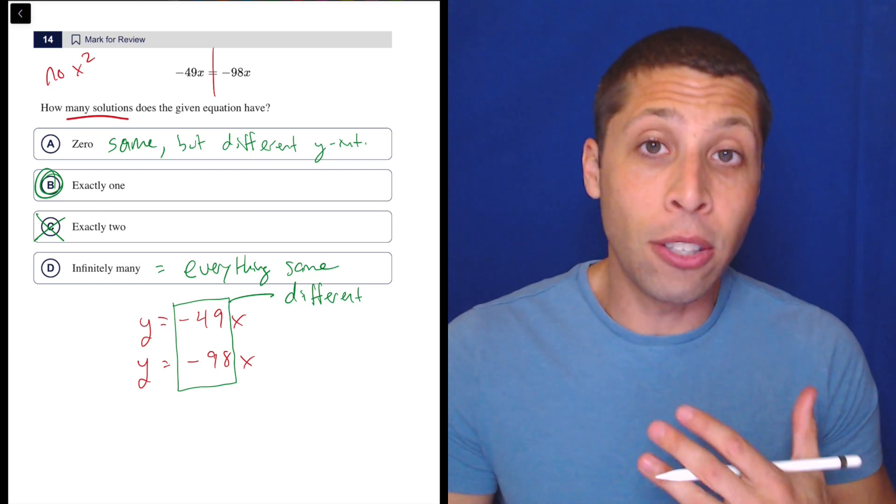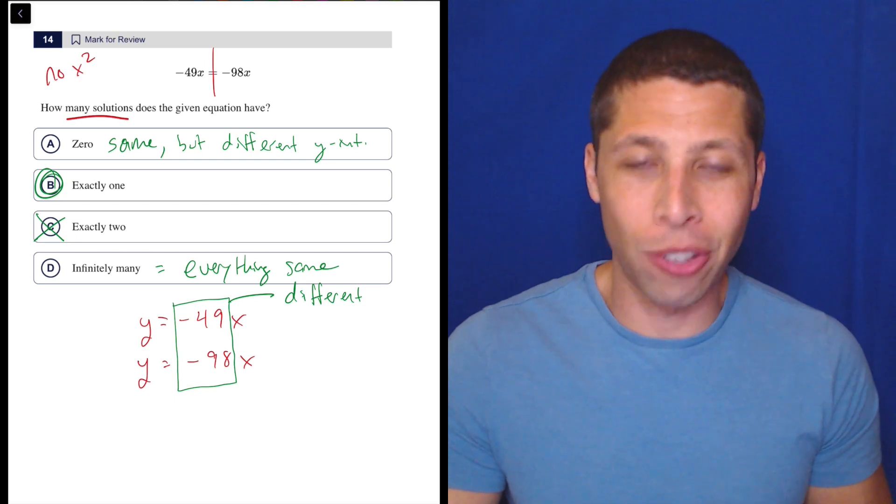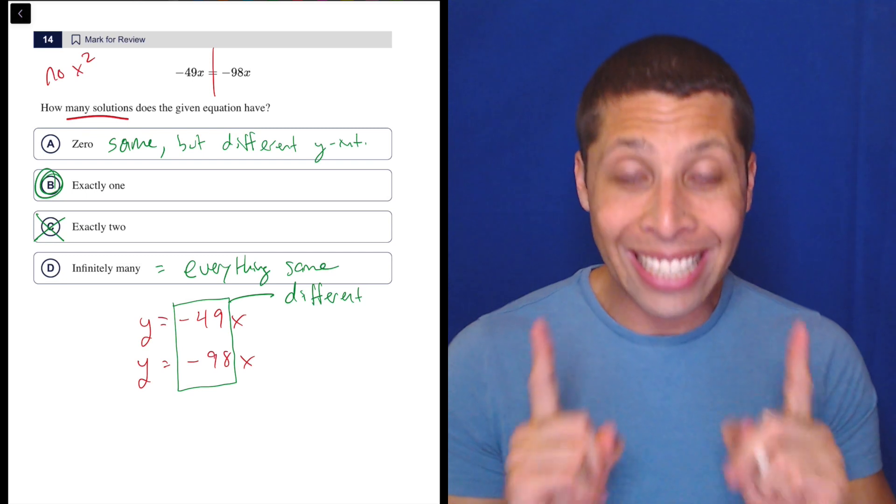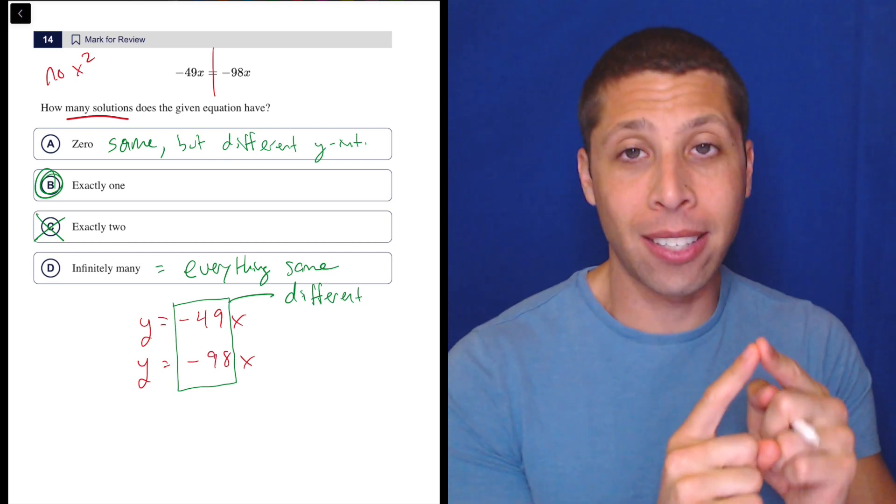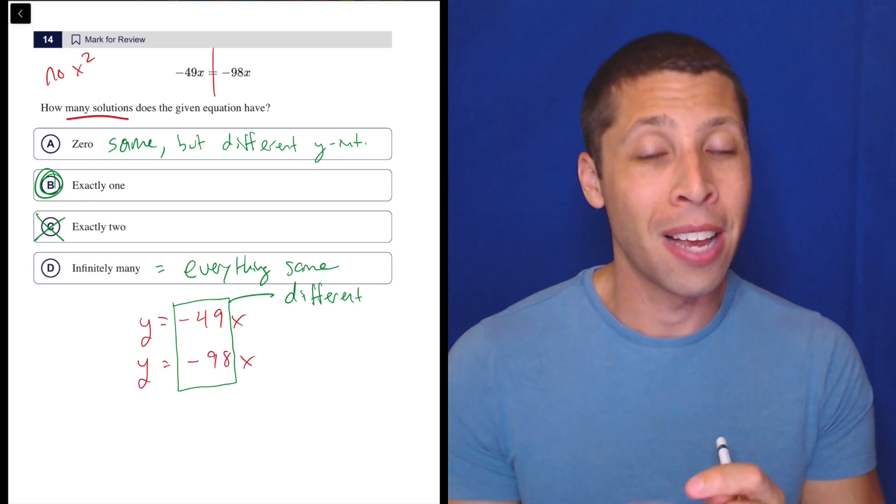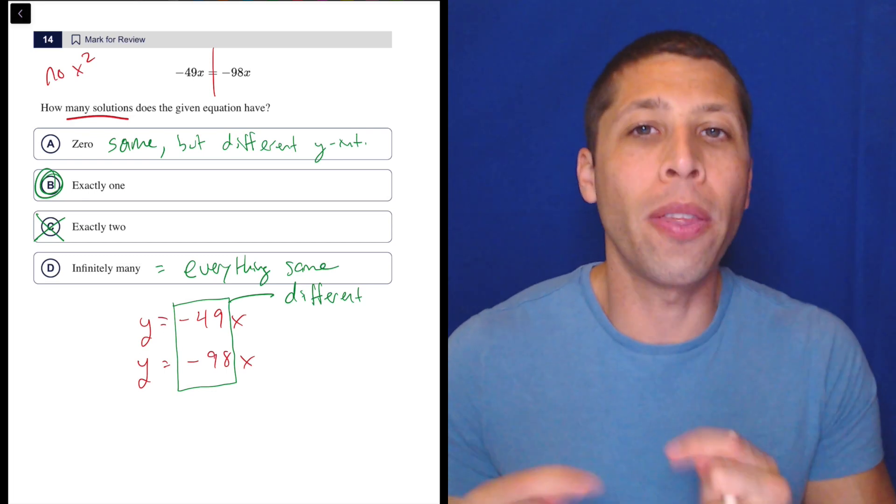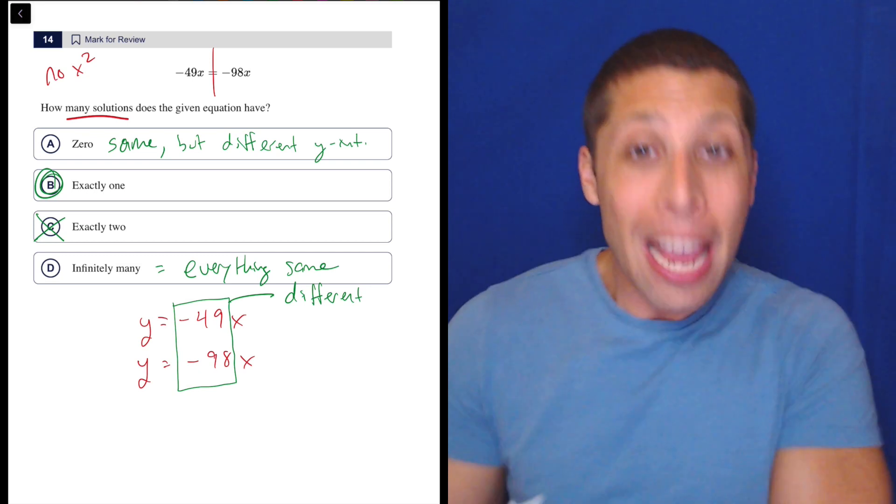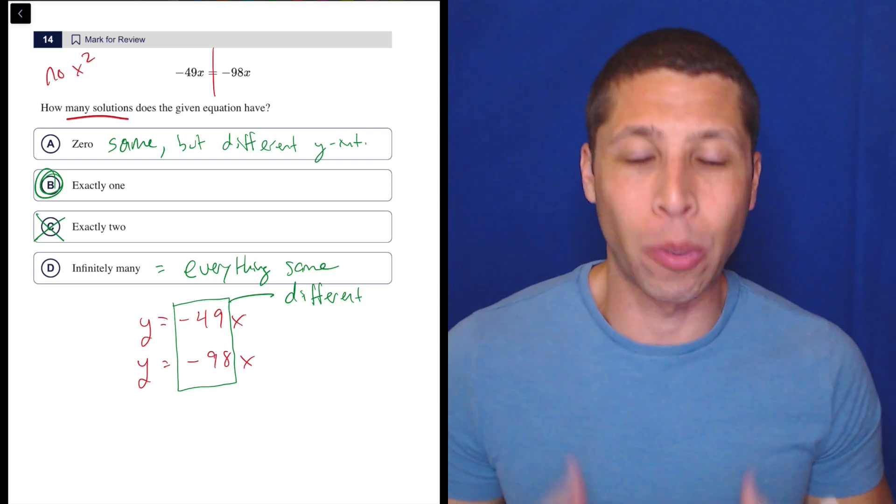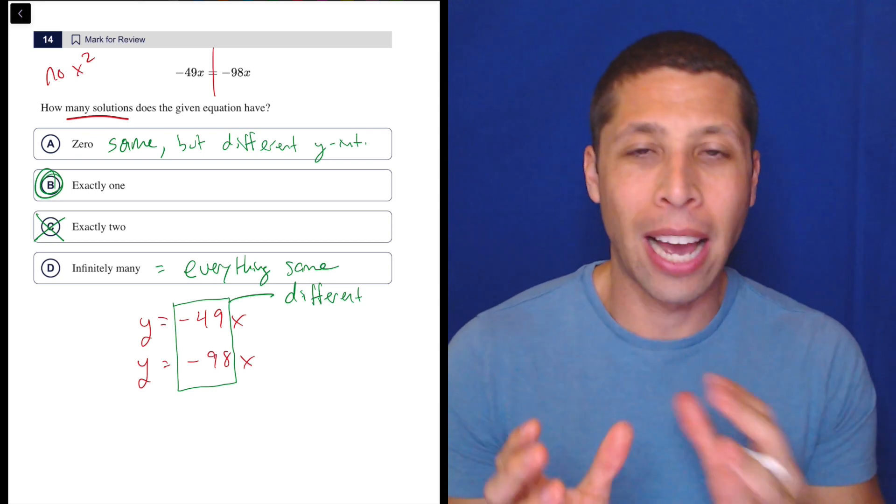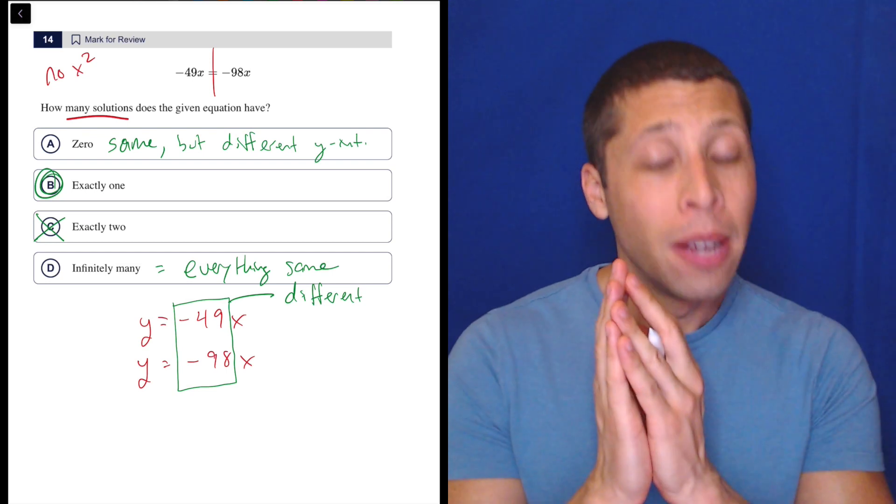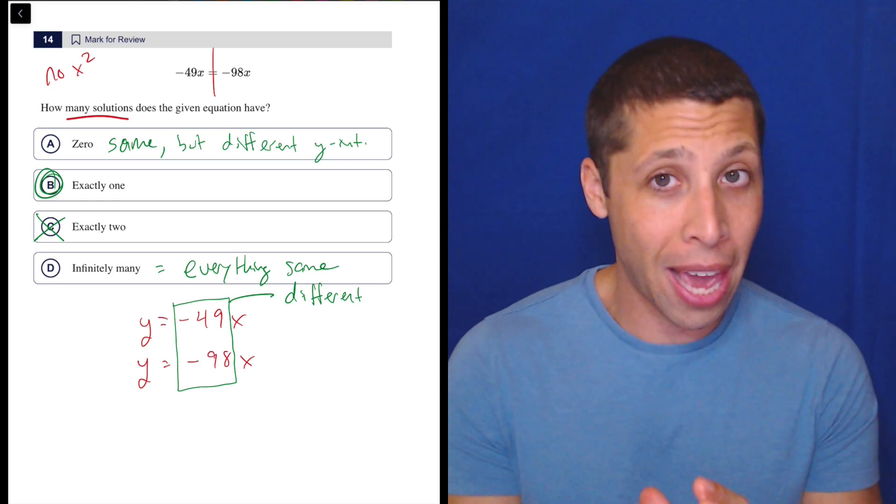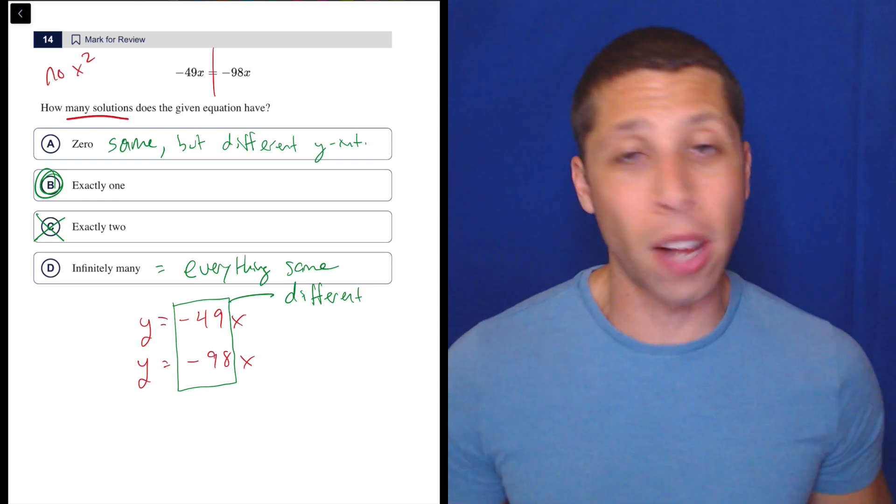Now, to me, that's very easy to tell when we have two linear equations because you can just look at the equation. Maybe we have to manipulate it slightly or do what I did here and kind of split it in two. But notice what I didn't do. I didn't add 98x to the other side to try to solve for x. When they asked for the number of solutions, I'm not really interested in finding what the exact solutions are. I'm not trying to solve. Because if the answer were A or D, I literally would not be able to solve. So that's why it's a bad instinct when they ask for the number of solutions to start moving things across an equal sign.